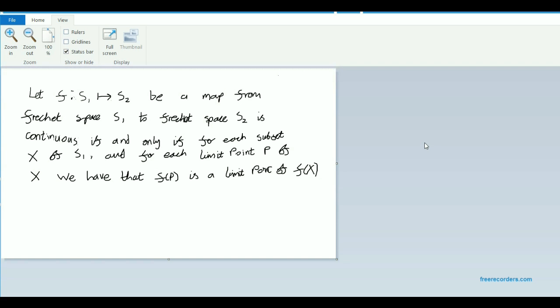Which in this case we're calling neighbourhoods. But it turns out in the case of these Fréchet V spaces, which we've been talking about recently, there's a fairly straightforward way to define what continuous mapping is.